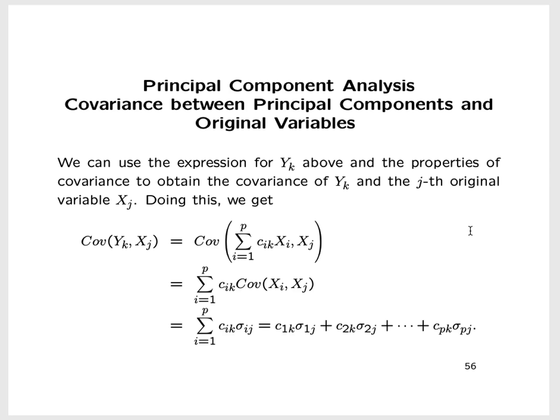Thinking back to our overview of distribution theory, one of the topics was the properties of covariance. We can utilize those properties to help us derive a formula — an expression for the covariance between y_k and x_j, where y_k is the kth principal component and x_j is the jth original variable.